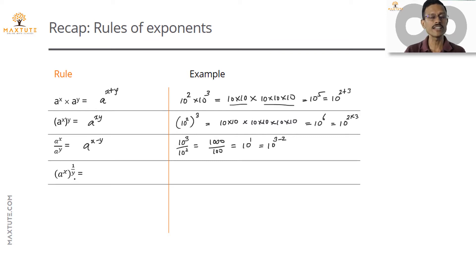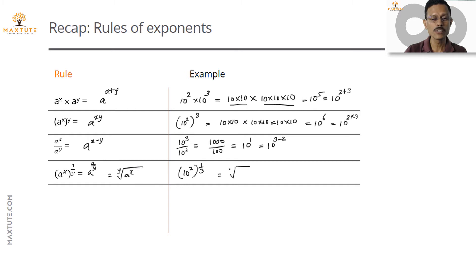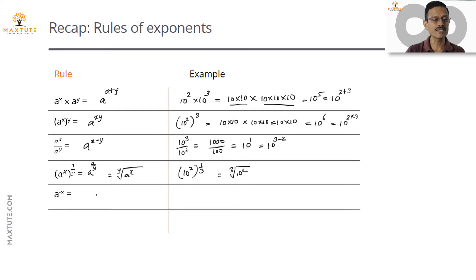The fourth rule: a^x raised to the power of 1/y resembles (a^x)^y, so it equals a^(x/y). More importantly, anything raised to the power of 1/y is the y-th root of that number — so this equals the y-th root of a^x. For example, 10² raised to the power of 1/3 is the cube root of 10². Also, a^(−x) equals 1 divided by a^x — so 10^(−5) equals 1/10^5.